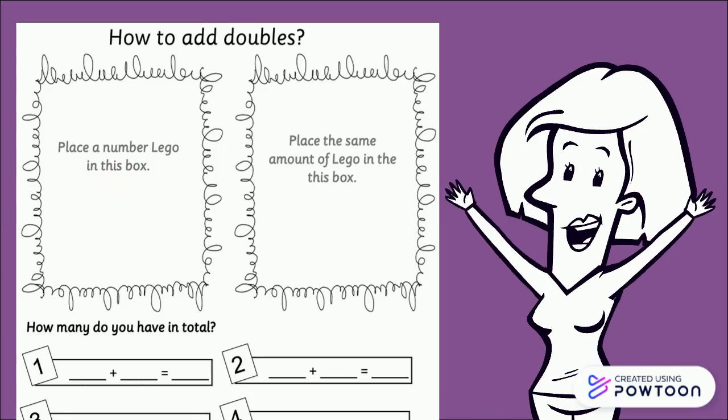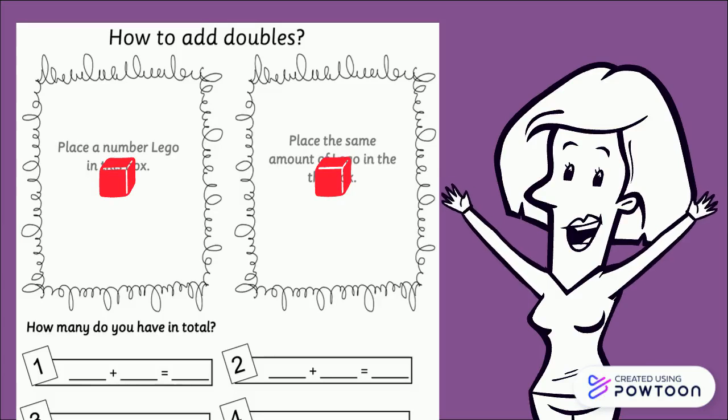When I put one cube on one mat, I need to put the same number of cubes on the other mat, which is one in this case. We can now add them together and we have two. In other words, we can say double one is two.